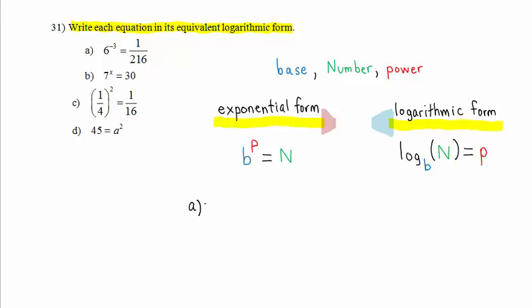Let's look at Part A. In Part A, we have the exponential equation 6 raised to the negative third power equals 1 over 216.